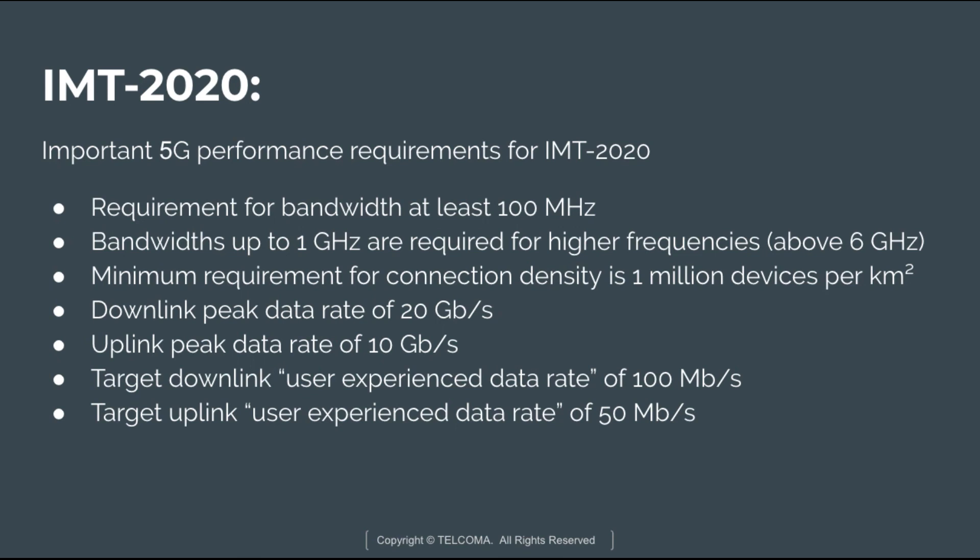The uplink peak data rate is 10 Gbps. The target downlink user experience data rate is 100 Mbps, and the target uplink user experience data rate is set to 50 Mbps. These are the important 5G performance requirements defined by the IMT 2020.